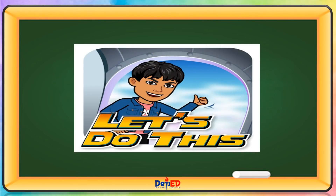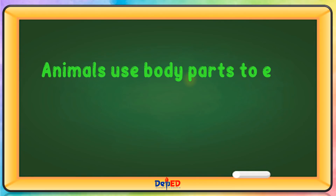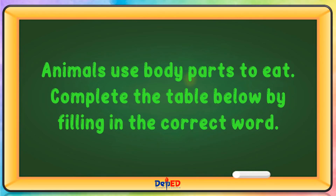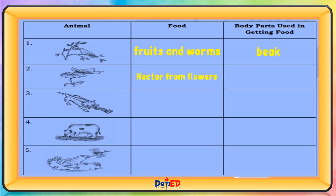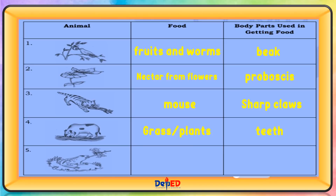Let's do this! Animals use body parts to eat. Complete the table below by filling in the correct word. Bird — food: fruits and worms — body parts used: beak. Butterfly — food: nectar from flowers — body parts used: proboscis. Cat — food: mouse — body parts used: sharp claws. Cow — food: grass or plants — body parts used: teeth. Frog — food: insects — body parts used: tongue.